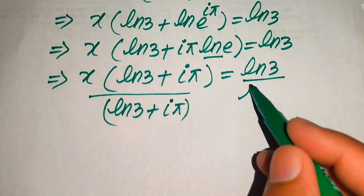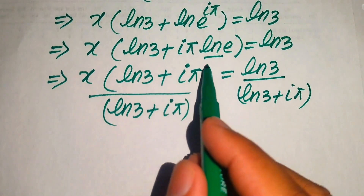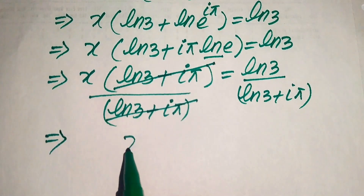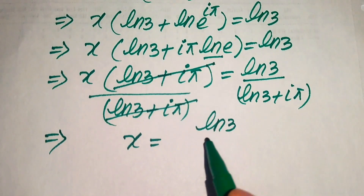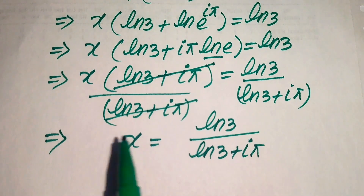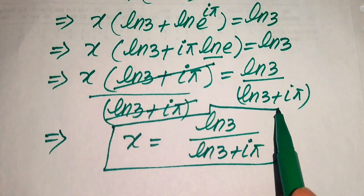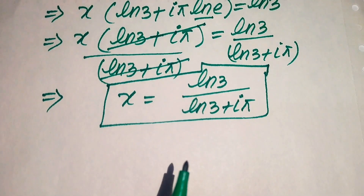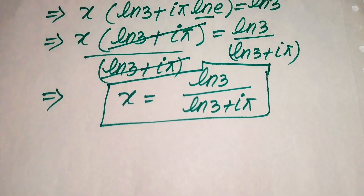Dividing both sides by (ln 3 + iπ), the left side cancels out, giving x equals ln 3 divided by (ln 3 + iπ). This is the value of x from the second method. I hope you liked both methods — this is the final answer. Thank you so much for watching this video; please subscribe to my channel for more exciting videos.